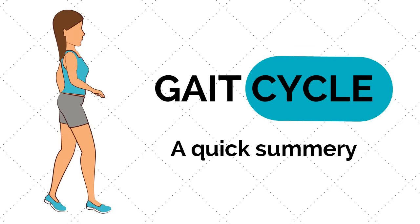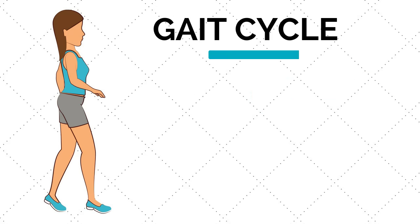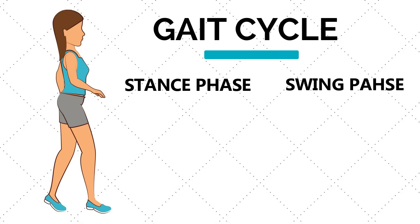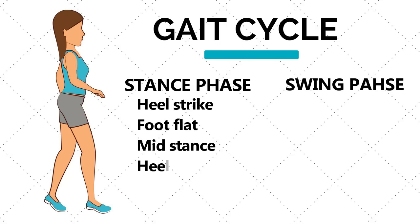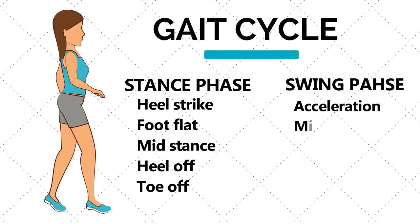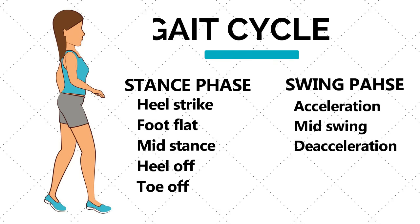Before we proceed, let us have a quick summary of the phases of the gait cycle. We can broadly classify the gait cycle into two phases: stance phase and swing phase. The components of stance phase are heel strike, foot flat, mid stance, heel off, and toe off. The components of swing phase are acceleration, mid swing, and deceleration.